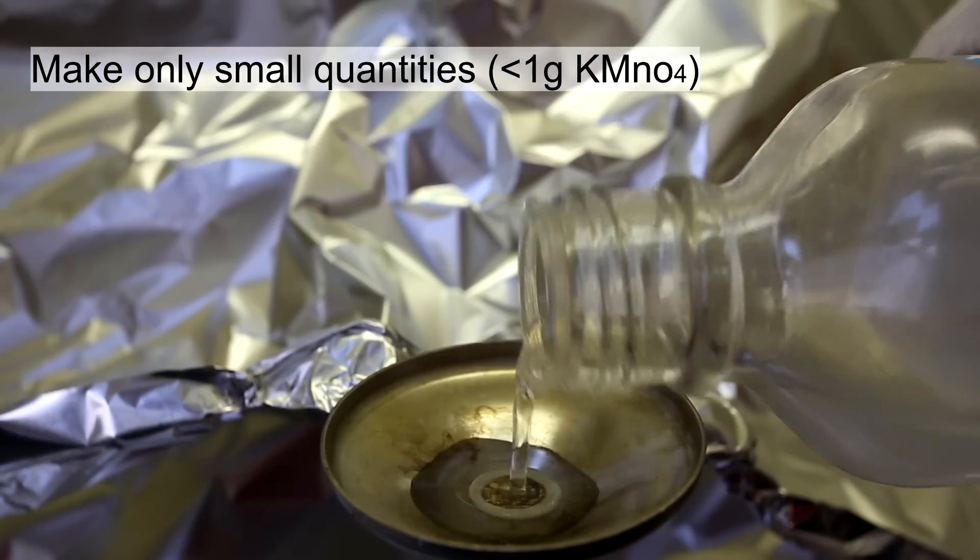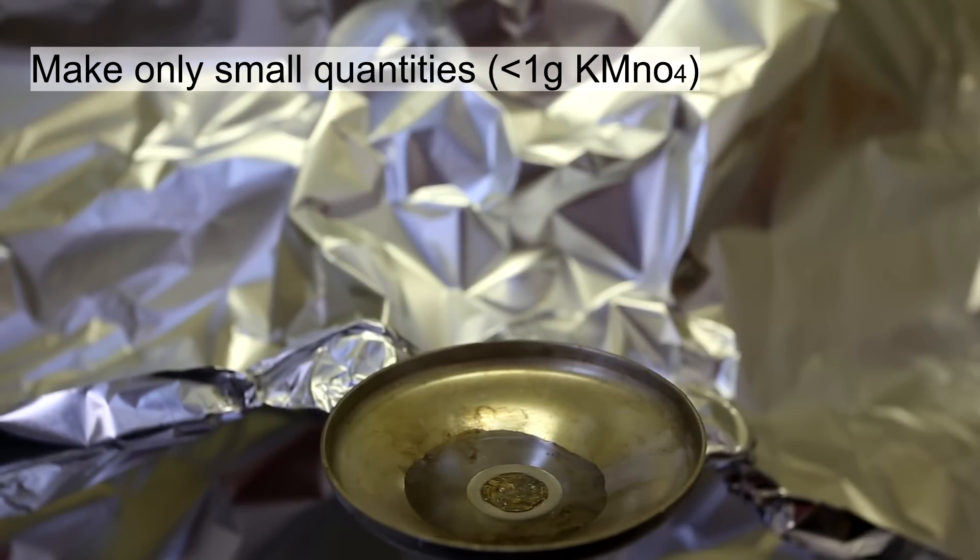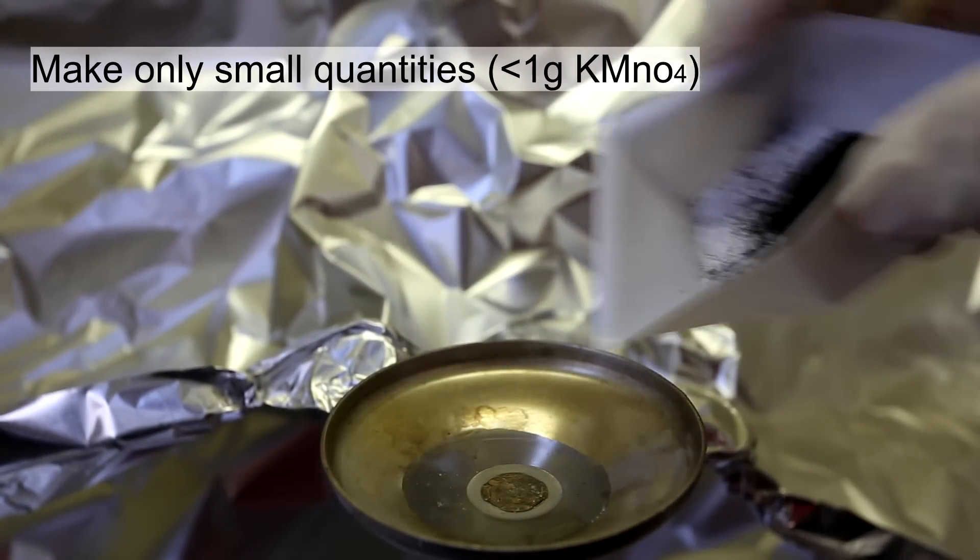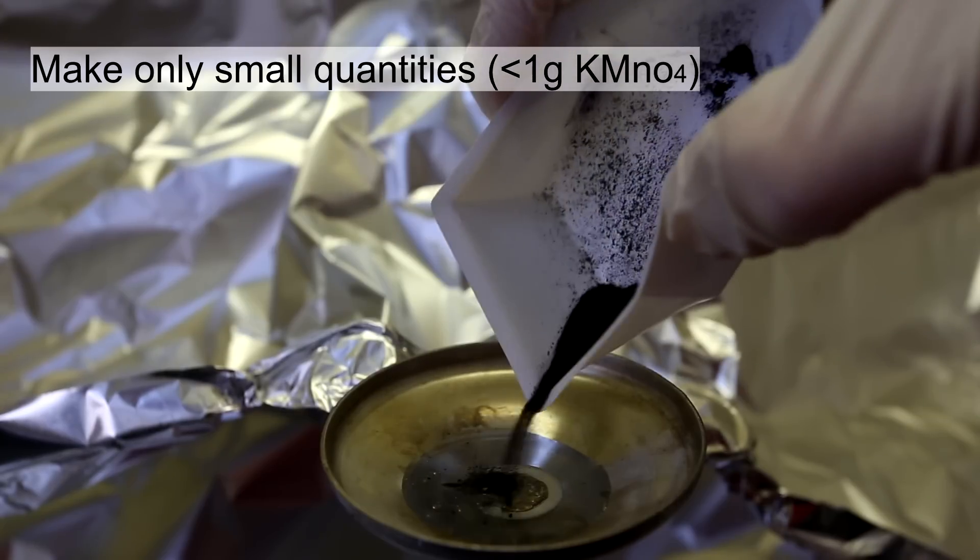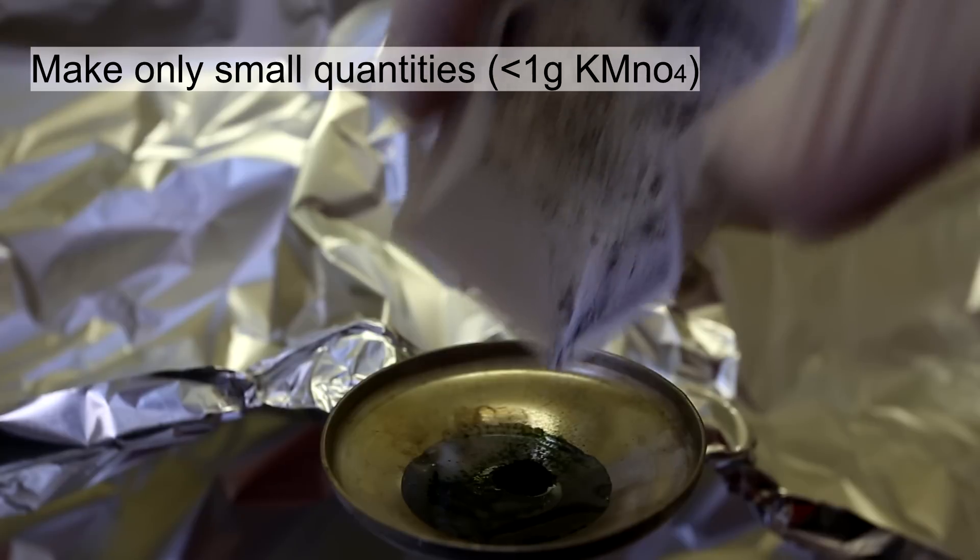Manganese heptoxide can be easily synthesized by adding potassium permanganate to an excess of concentrated sulfuric acid. First, add the sulfuric acid and then drop in some potassium permanganate.